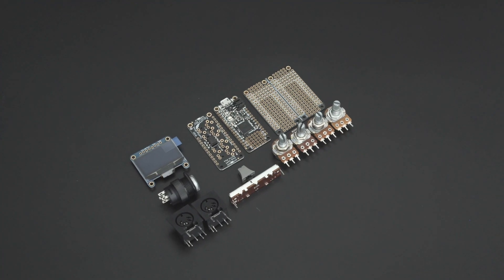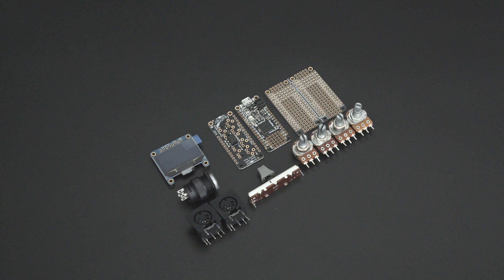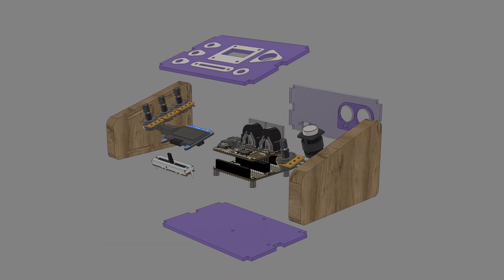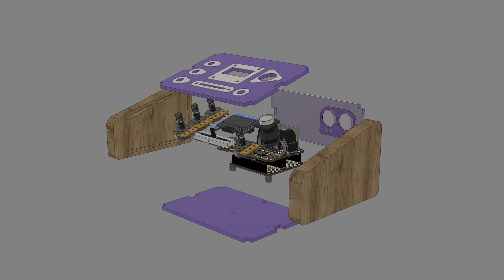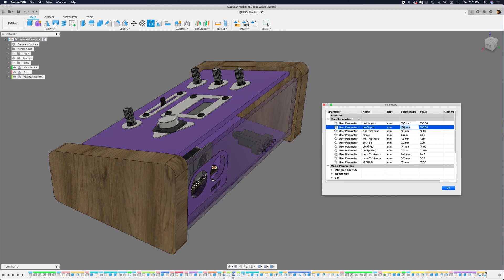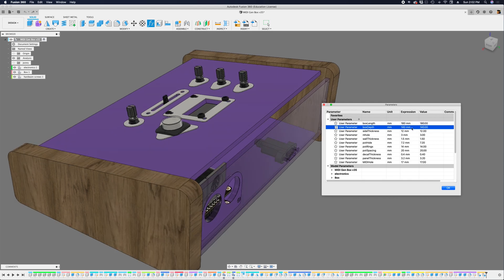You can get the parts to build this project; links are in the description. We designed the enclosure to be made from pieces of wood and acrylic. To make sure everything fits, we use 3D models of the electronics. We set up user parameters so we can quickly adjust the size, so it's easy to scale it up.